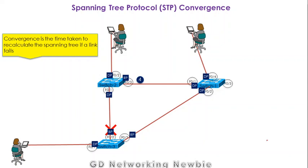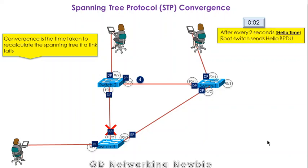To discuss that, let's first talk about what happens in normal operation. When a spanning tree has been established — after all the exchanges of hello BPDUs among the switches — all switches have agreed on the root switch, designated ports, and the network has forwarding and blocking states. The network is said to be in a stable state. In this stable state, after every two seconds, the root switch sends a hello BPDU. This two-second interval is known as the hello time, which is the default and can be changed.